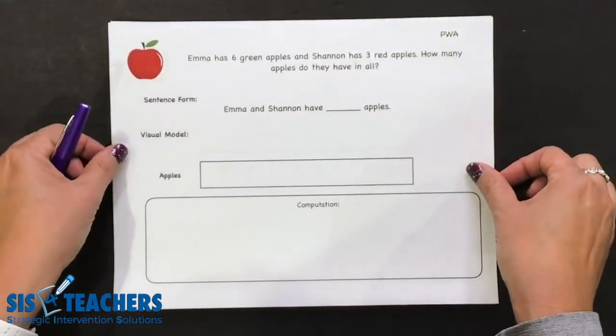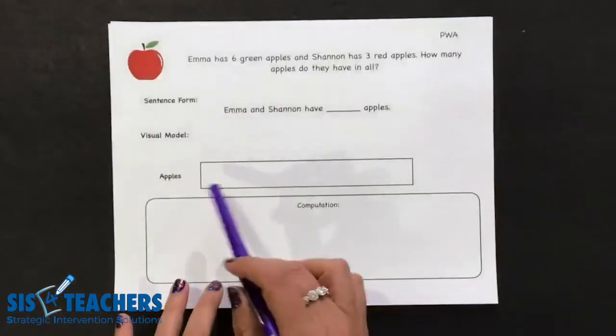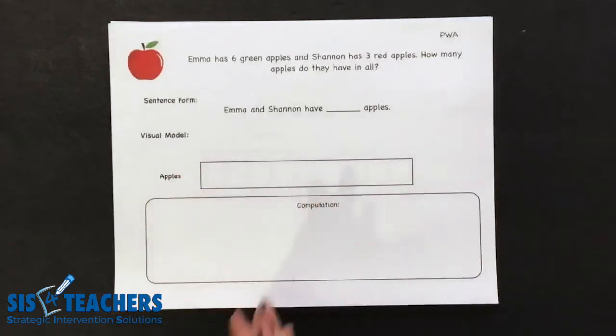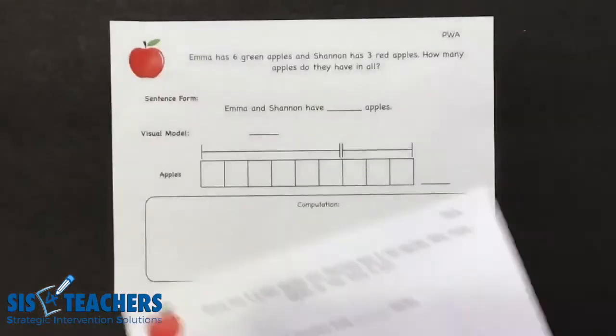A non-proportional bar uses the sections to have the student section the quantity being asked in the story problem. When we use visual models, keep in mind that it is really a reading comprehension strategy.